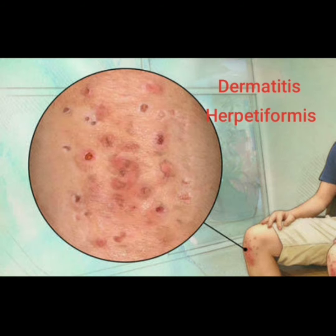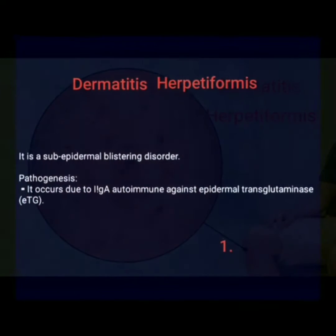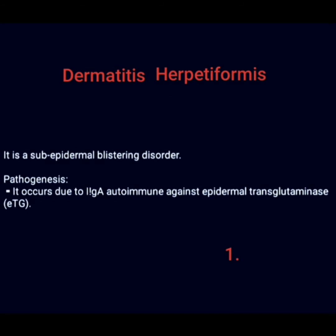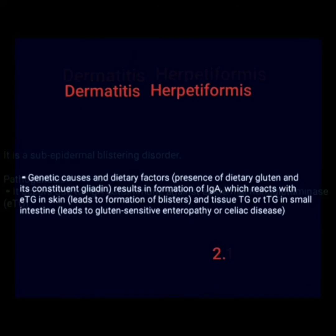Welcome to Dr. Emma's Medicine YouTube channel. In this video, I am discussing dermatitis herpetiformis. Dermatitis herpetiformis is a sub-epidermal blistering disorder. Its pathogenesis involves immunoglobulin A (IgA) autoimmunity against epidermal transglutaminase (eTG).